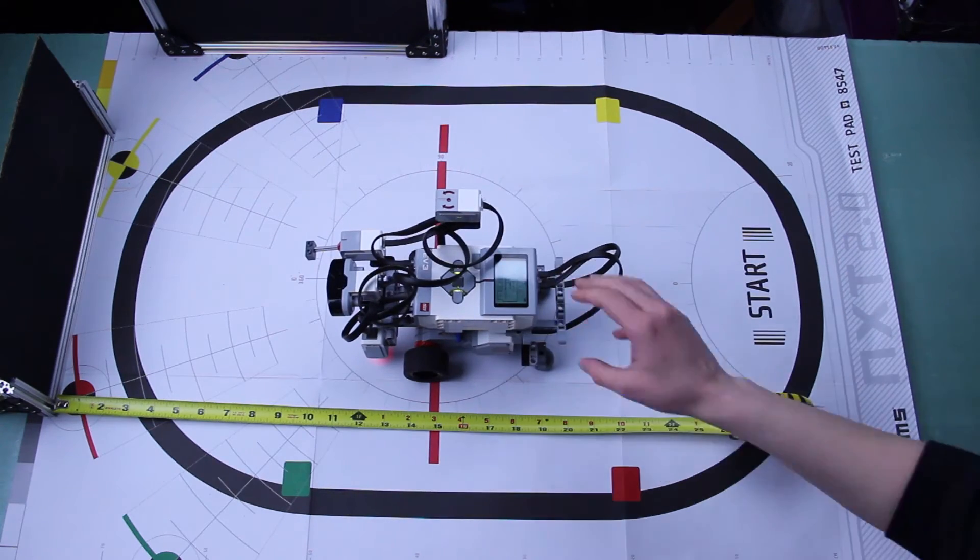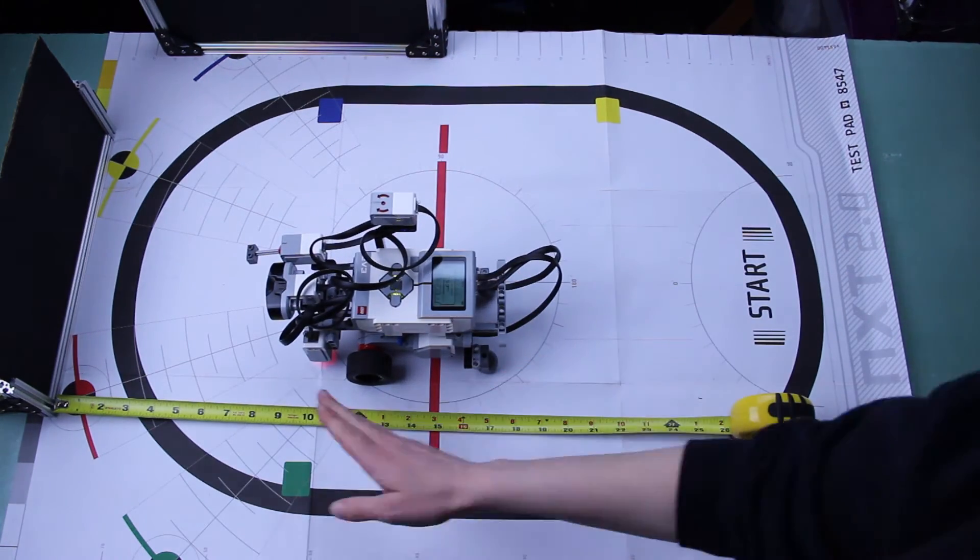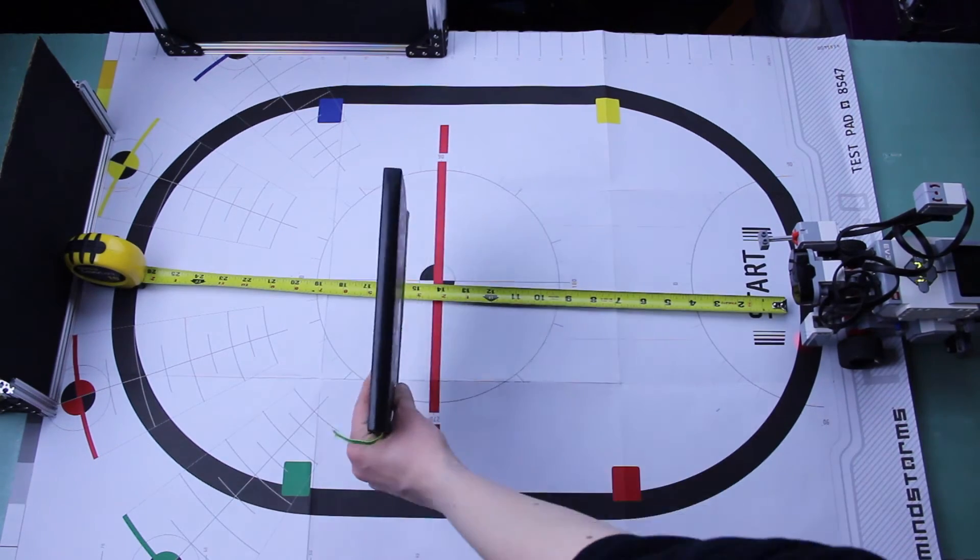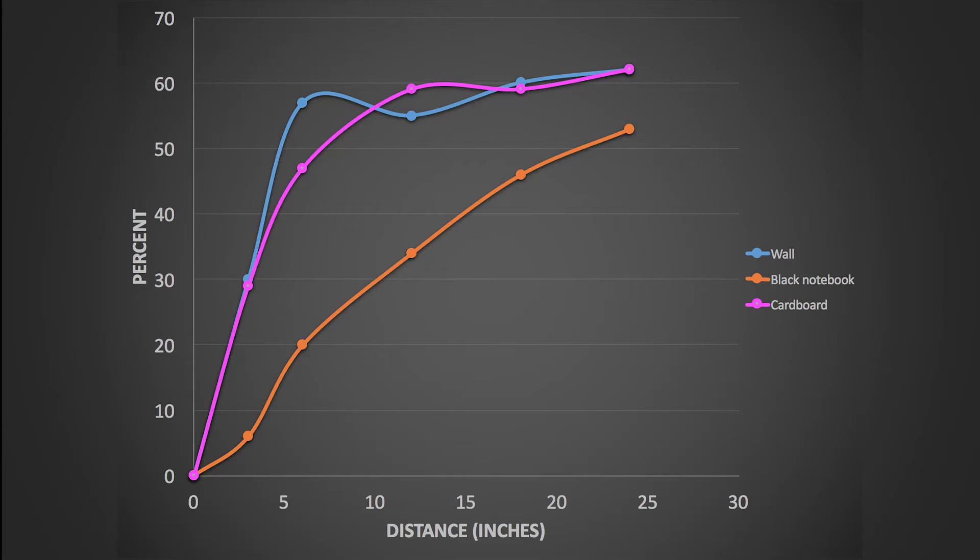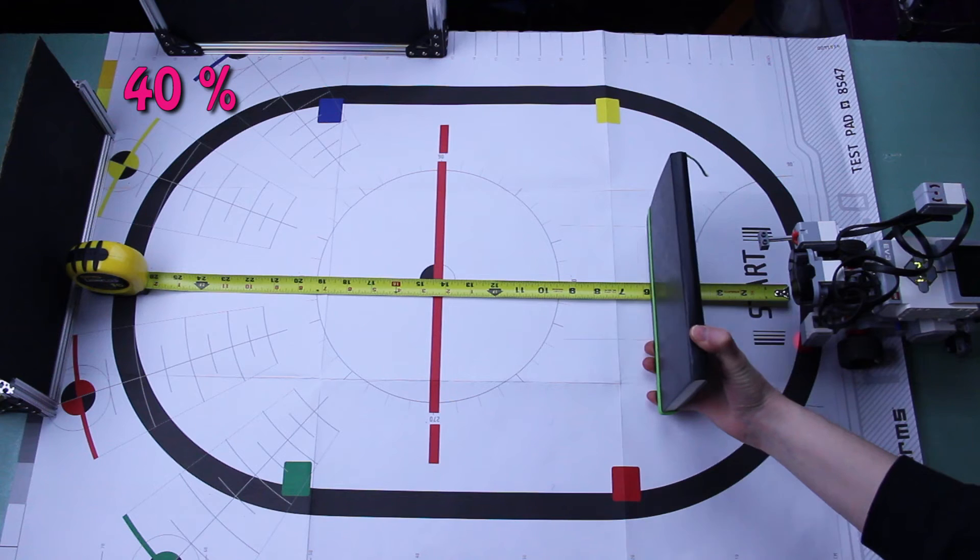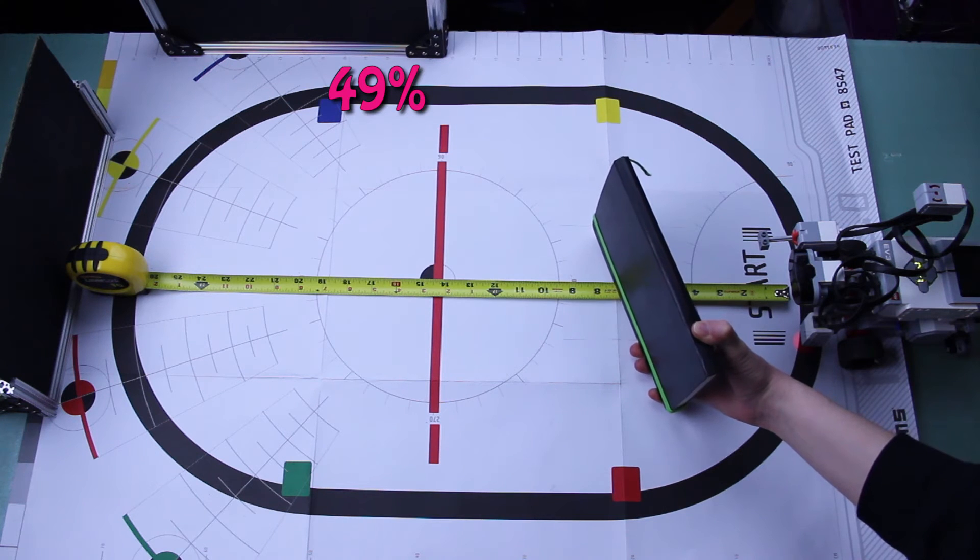Reflectivity also depends on the type of material. We measured the reflectivity of our black wall compared to a hardcover notebook, a cardboard notepad, and we've gotten varying results. The correlation between the percent and the distance isn't even linear. And if you angle the surface, the values also change.